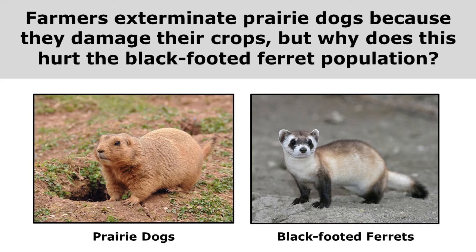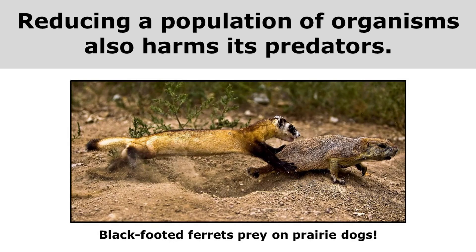Farmers exterminate prairie dogs because they damage their crops. But why does this hurt the black-footed ferret population? That's because black-footed ferrets prey on prairie dogs, and reducing a population of organisms also harms its predators. When the farmers exterminate the prairie dogs, they're taking away the black-footed ferret's food, and that causes the black-footed ferret population to decrease.